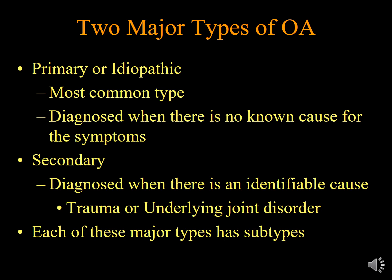There are two main types of Osteoarthritis: primary Osteoarthritis, which is the most common type, and secondary Osteoarthritis, which may be related to infection, trauma, rheumatoid arthritis, or other problems in the joint causing Osteoarthritis.